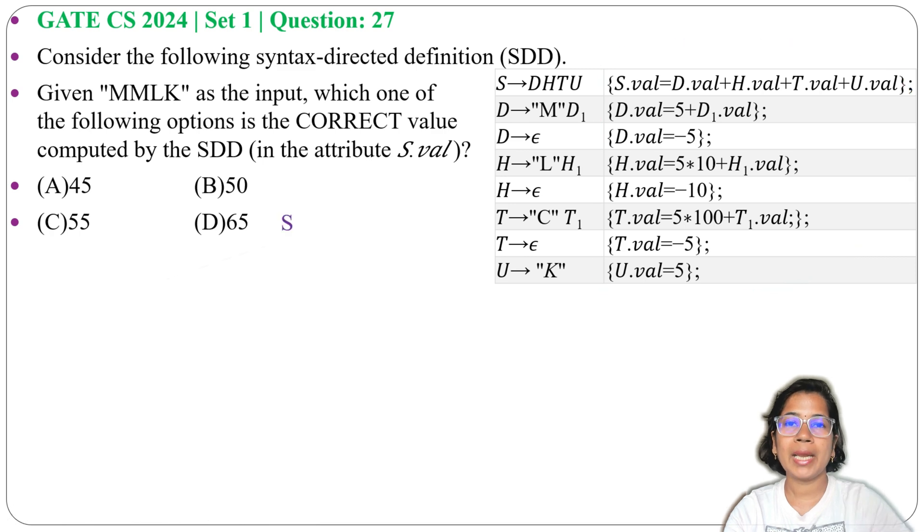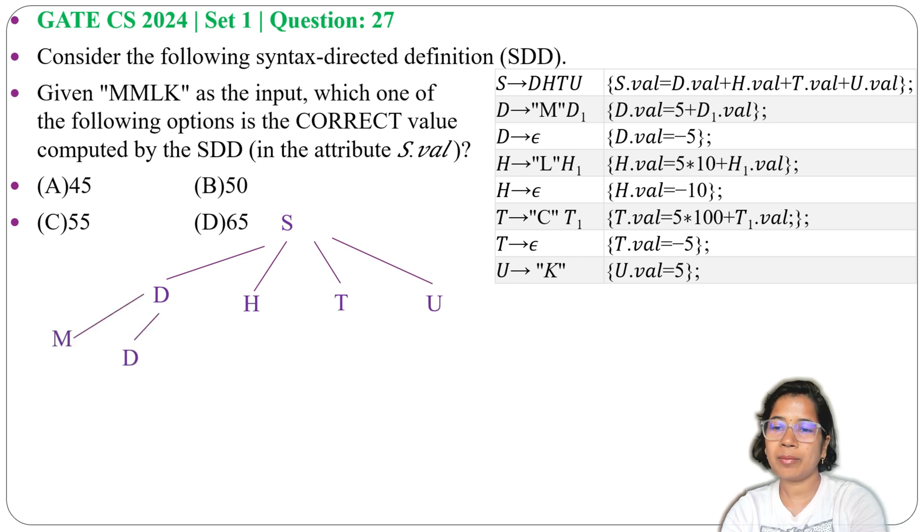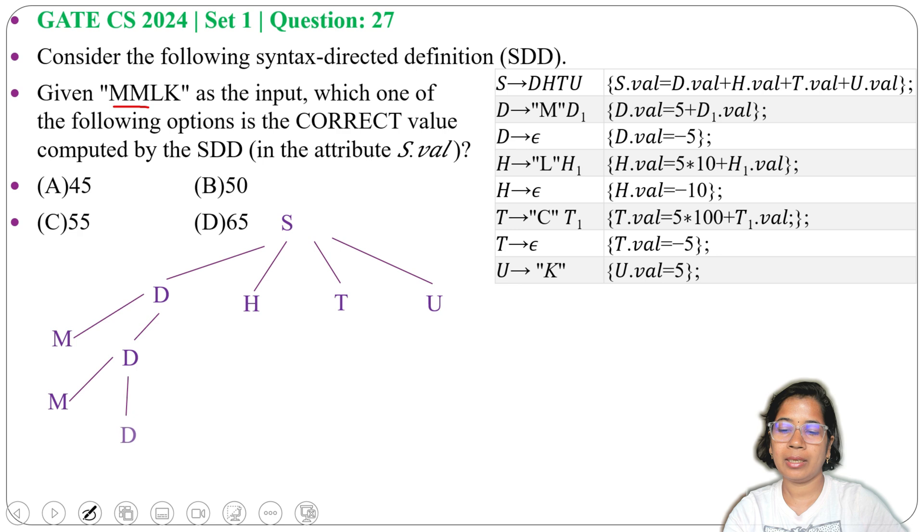Now from S I can derive D, H, T, U. Then from T I can derive M and D. Next, again from this D I will derive M. Since there are two M's, again from D, M and D. Then from this D I will derive epsilon.